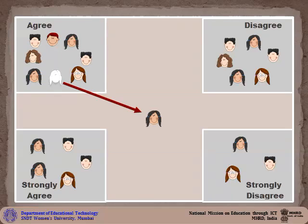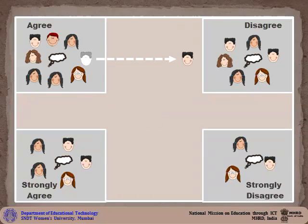This student presents a persuasive speech to the class supporting the group's position. Then, a spokesperson from each of the other corners discusses why their group is right. They are then asked to think about what they have heard and move to a new corner if they were swayed by another group's presentation.